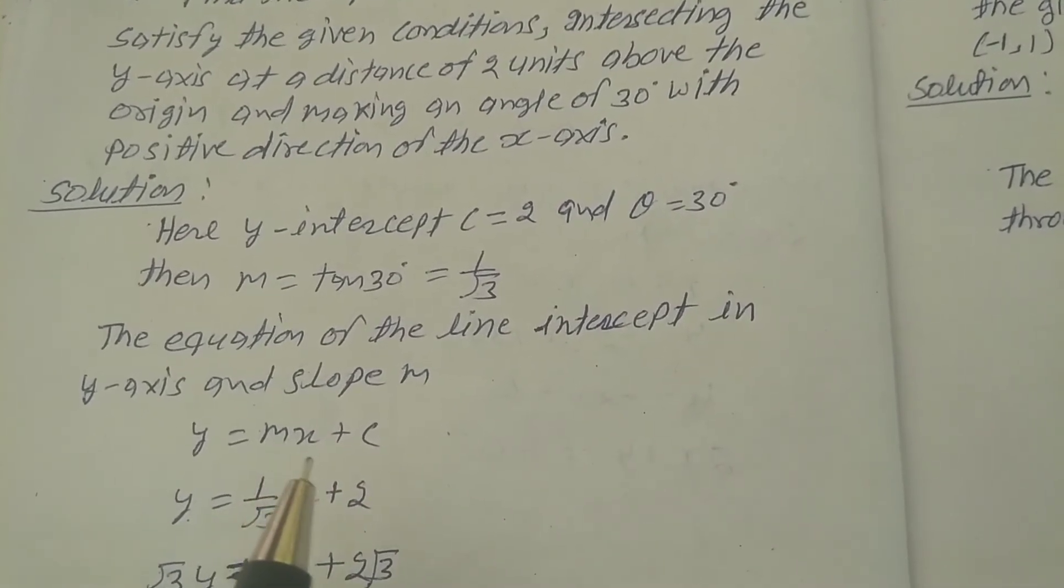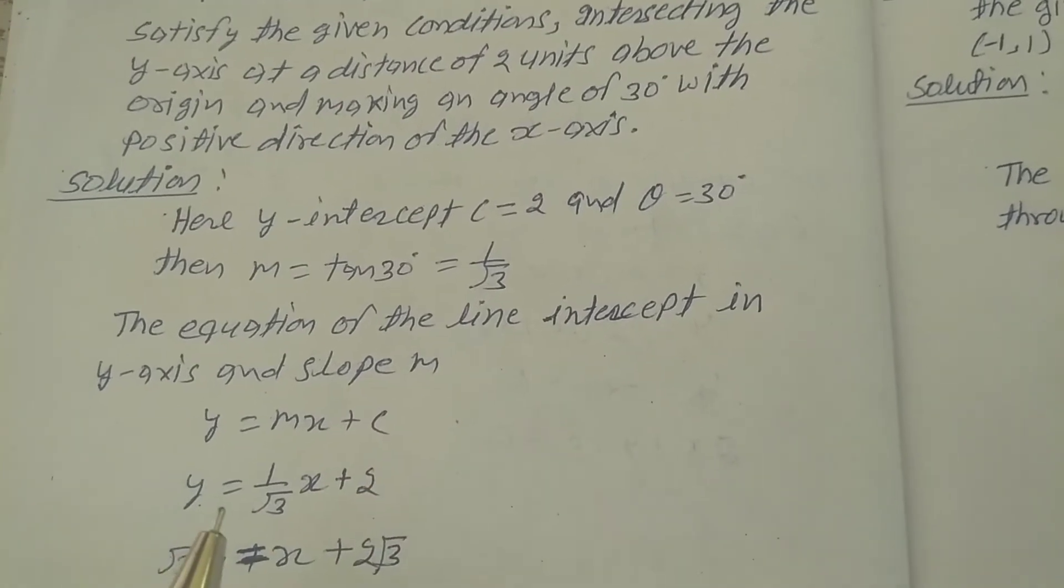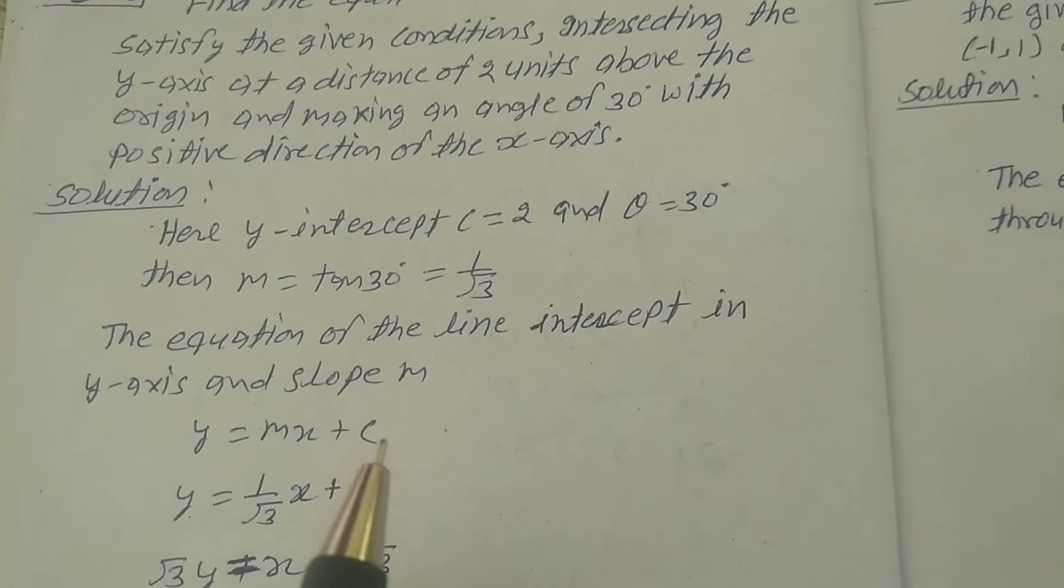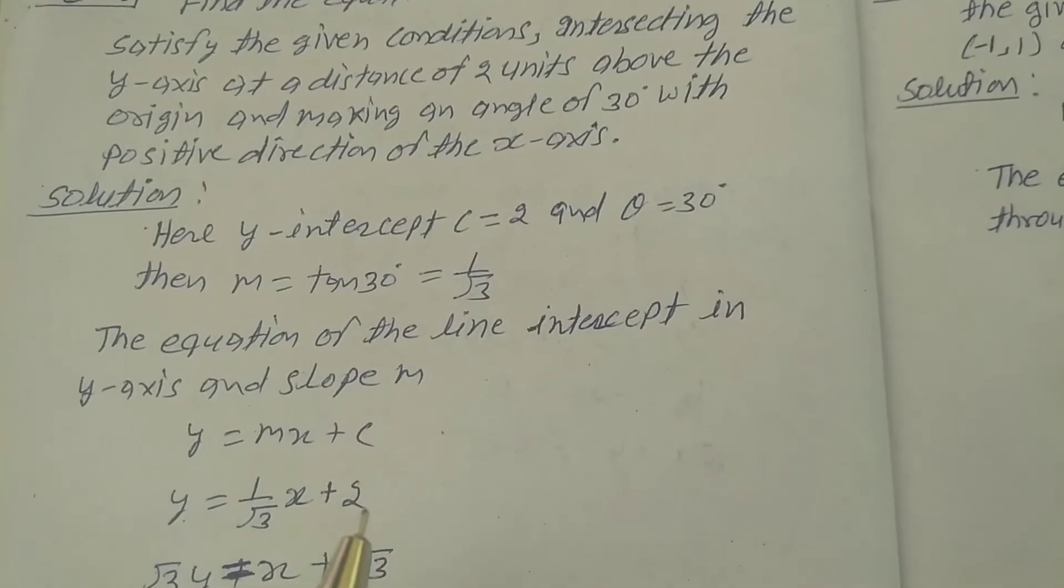In this equation, put the value of m and c. Y equals m value, which is 1 upon root 3, times x plus c value, which is 2, so plus 2.